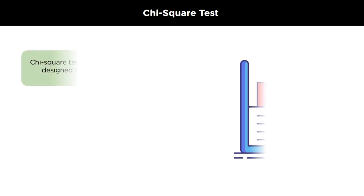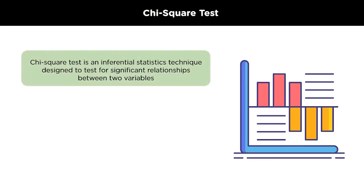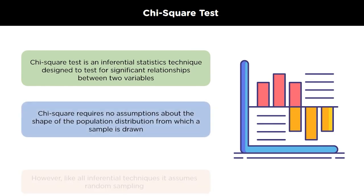The chi-square test is a statistical procedure for determining the difference between observed and expected data. This test can also be used to determine whether categorical variables in our data are correlated. It helps to find out whether a difference between two categorical variables is due to chance or a relationship between them. The chi-square test requires no assumption about the shape of the population distribution from which the sample is drawn.